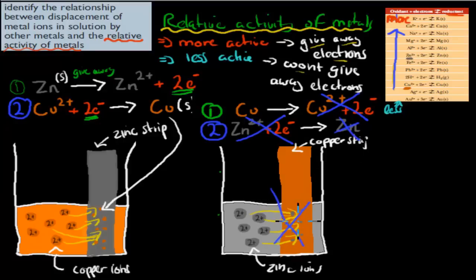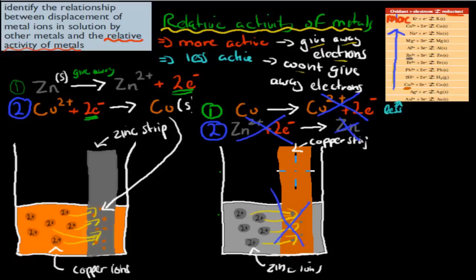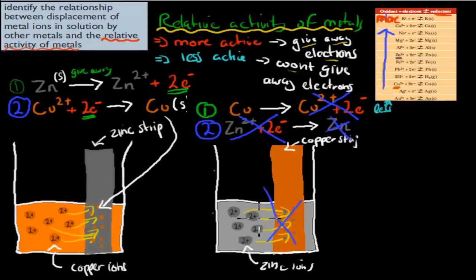Displacement only happens if the metal ion in solution is less active than the solid metal strip. In other words, the solid metal on the strip has to be more active than the metal ions in solution — otherwise displacement won't occur.